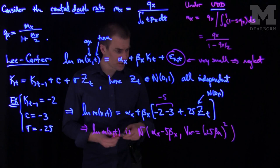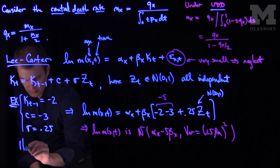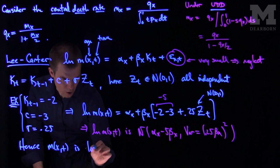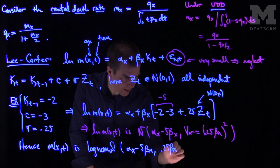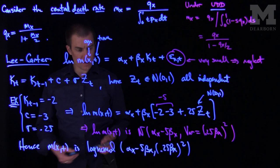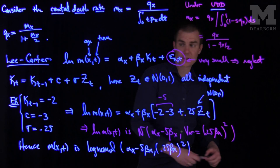And so in particular what we see for Lee-Carter is that this m of xt is log normal with parameters alpha x, negative 5 beta x, and 0.25 beta x quantity squared as the variance. So for log normal random variables, we can exponentiate a normal random variable and get the central death rate.